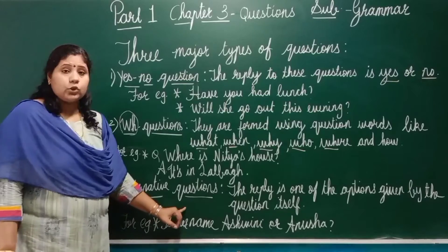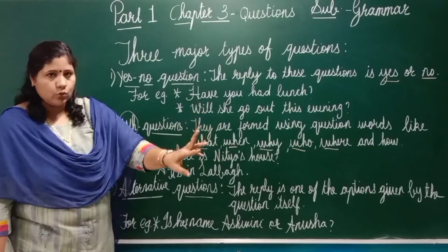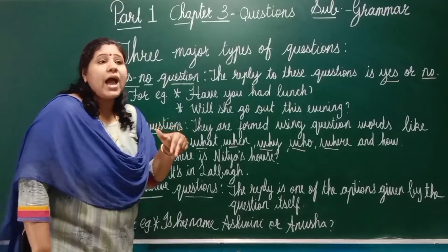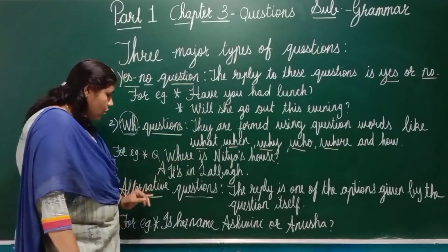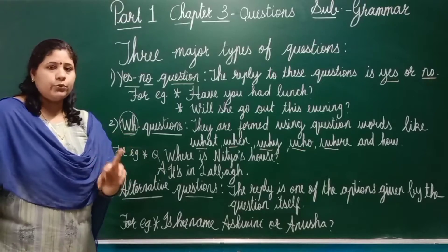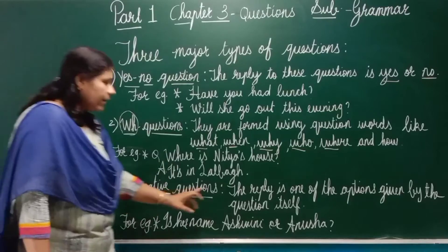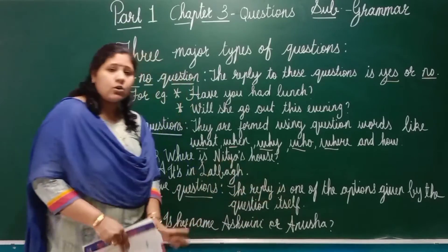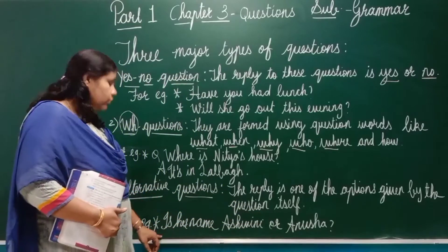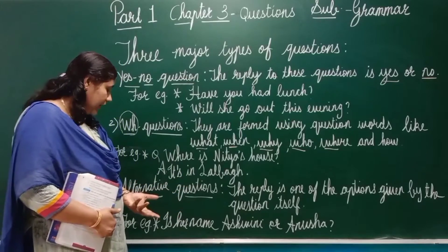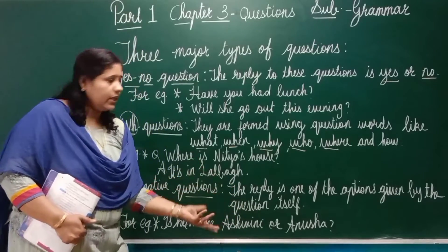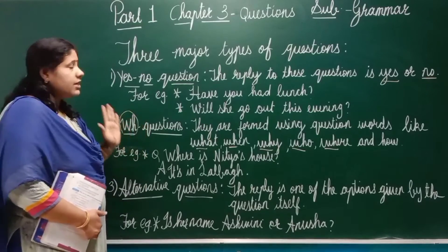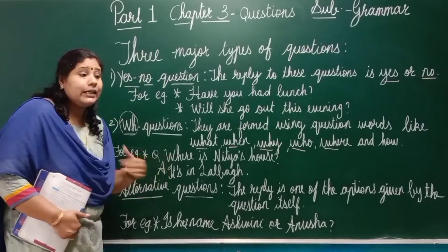Third type: alternative questions. In alternative questions, options are given to you within the question itself. For example: 'Do you like to have tea or coffee?' — tea or coffee. Alternative means giving an option, a choice. The reply is one of the options given in the question itself. For example: 'Is your name Ashwini or Amsha?' You reply with either Ashwini or Amsha. That is the brief introduction of what we are going to learn in this chapter.